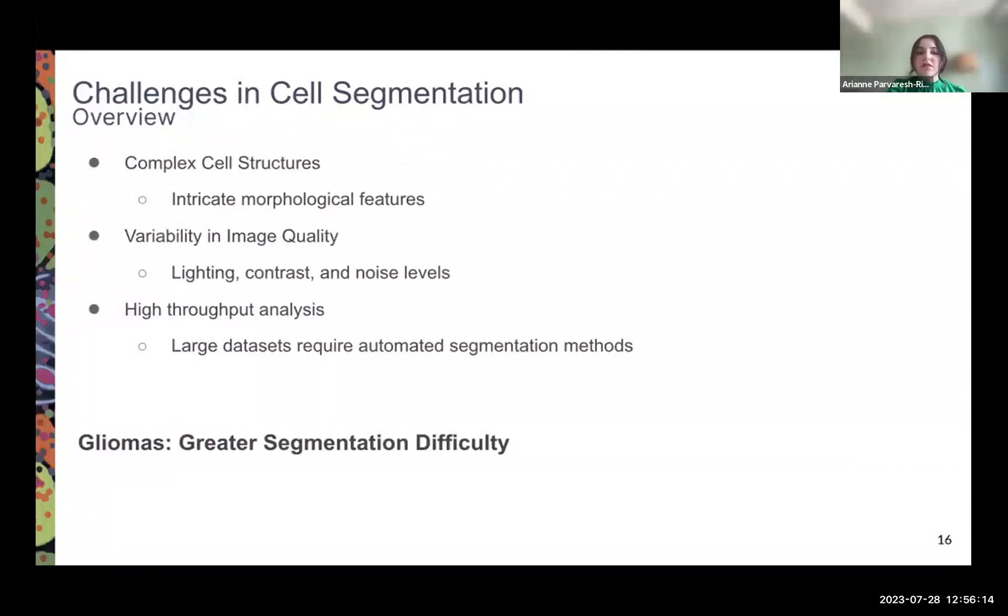Some challenges involved with cell segmentation are the complex structures of cells. Cells can exhibit really complex morphological features such as irregular shapes, branching, overlapping, which makes them challenging to identify and segment accurately. The next issue is variability in image quality. When images are produced, no matter what technique is used, there could be image quality issues that lead to challenges with cell segmentation. These issues usually arise from contrast, lighting, and noise levels. Another issue is the large data that we're working with. High-throughput analysis requires automated segmentation, especially when you're working with millions of cells, which is what we do at the TAN Lab.